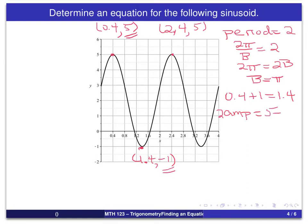So it's 5 subtract negative 1, or 6. And so we get an amplitude of 3, which will be our value for a.